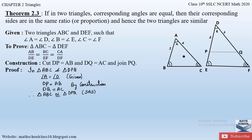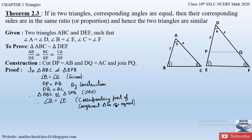Since the two triangles are congruent, the corresponding angles are also equal by CPCT (Corresponding Parts of Congruent Triangles are Equal). Therefore, angle B = angle P. This criterion you have learnt in your previous classes while studying the congruency topic.